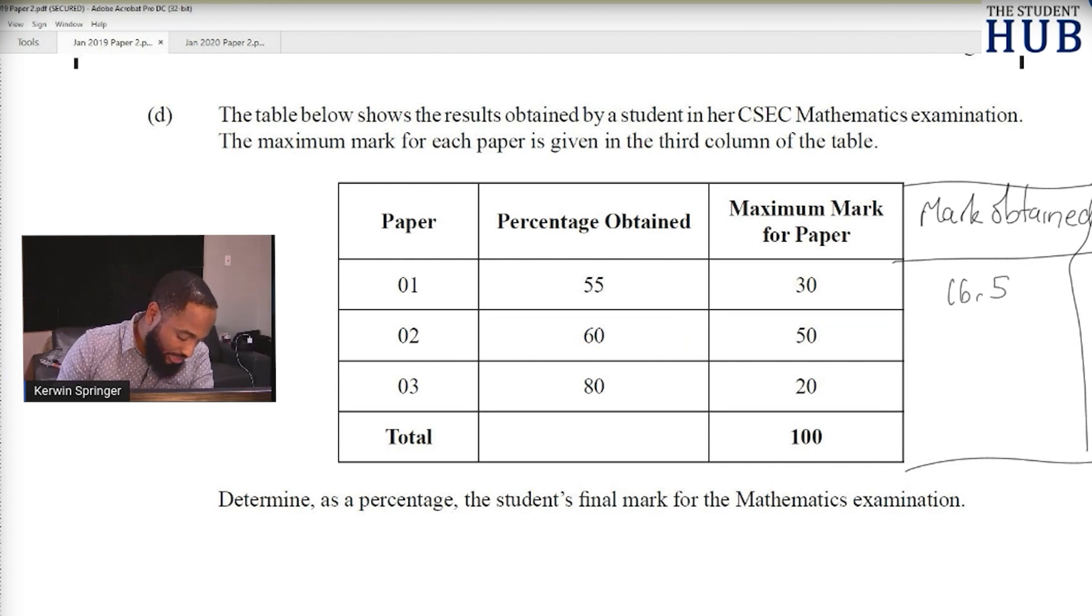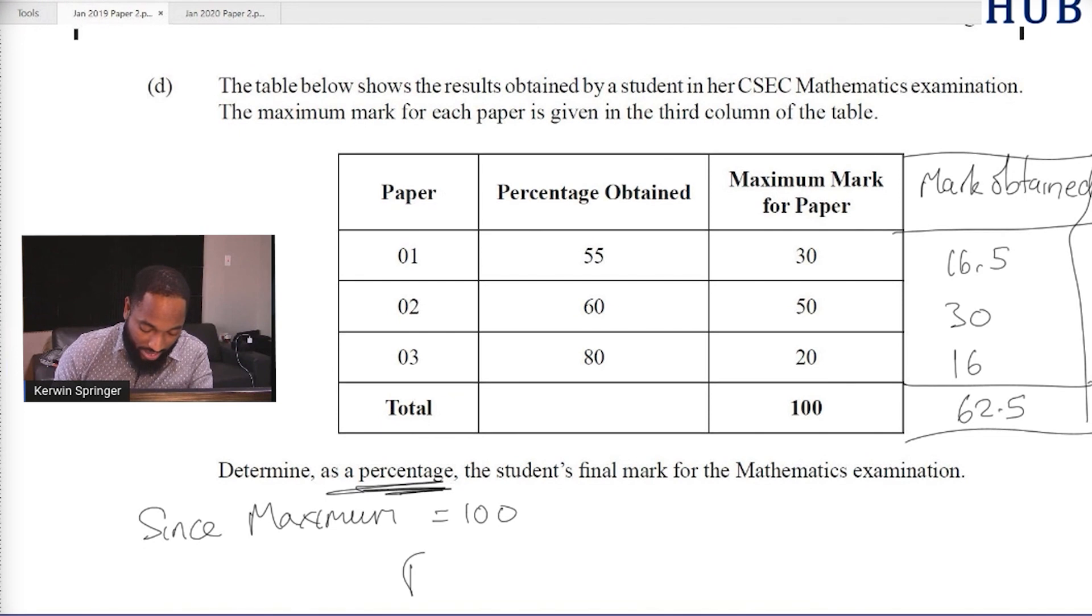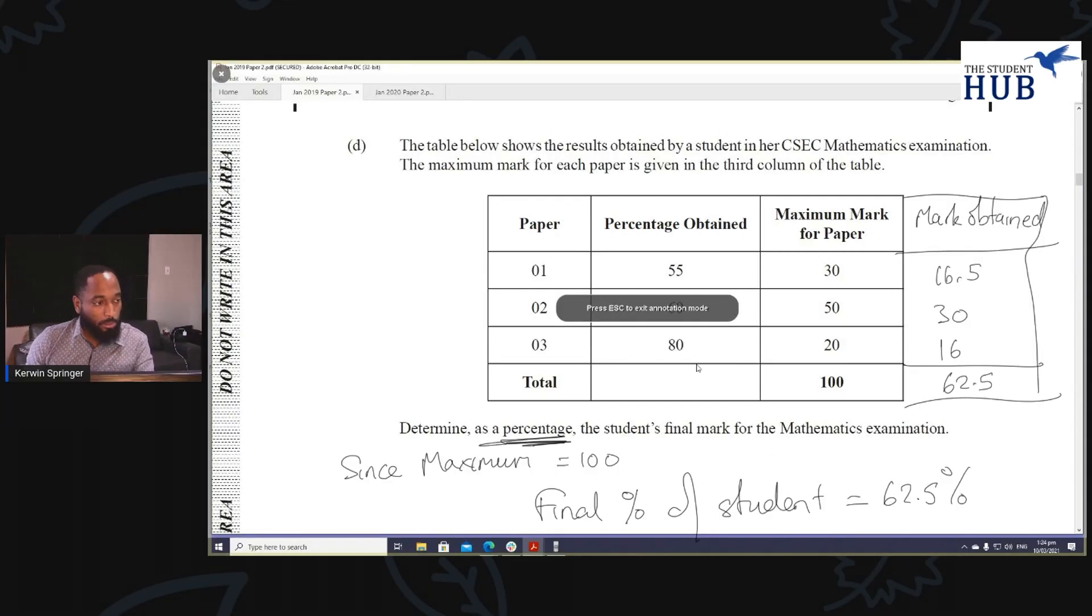Adding these up gives 62.5. Since the maximum mark is 100, then as a percentage, the final mark of the student is 62.5%.